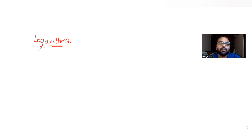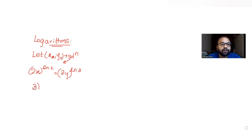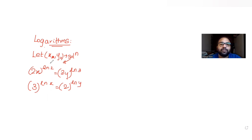Today's question tells us: let x0 and y0 be the solution of two equations. The first equation is 2x raised to log 2 (base e) equals 3y raised to log 3 (base e). The second equation is 3 raised to log x (base e) equals 2 raised to log y (base e). Here x and y are the variables and the solutions are x0 and y0. We have been asked to find the value of x0.